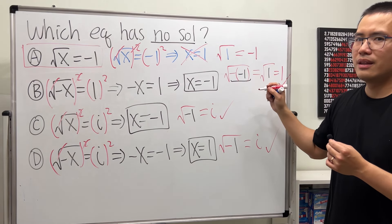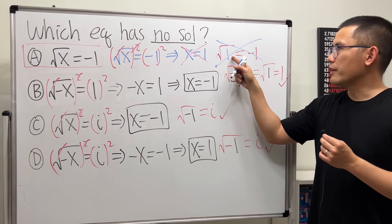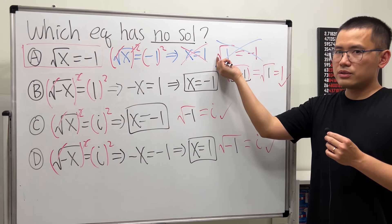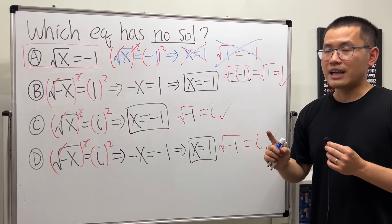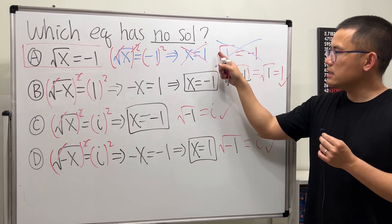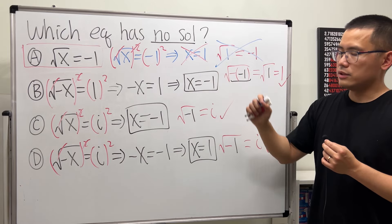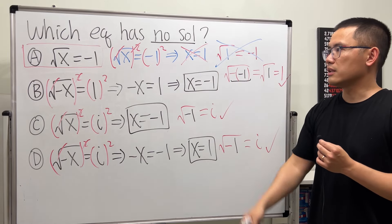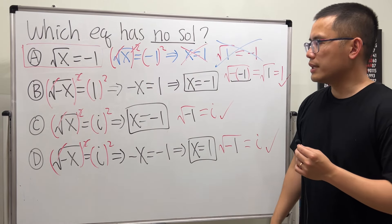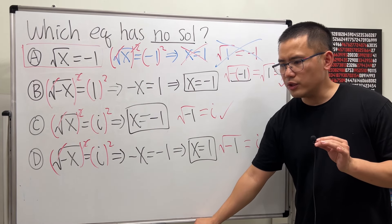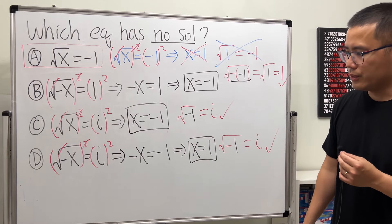That is wrong. The square root symbol represents a computation that gives only one answer — the positive square root. Square root of 1 equals positive 1, not negative 1. Therefore, this equation has no solutions. In fact, there are other equations that also have no solutions no matter how hard you try.